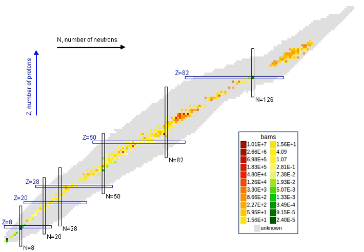Neutron capture on protons yields a line at 2.223 MeV, predicted and commonly observed in solar flares.